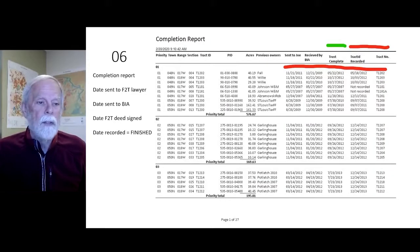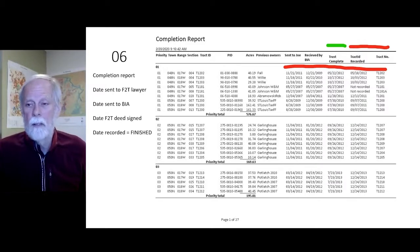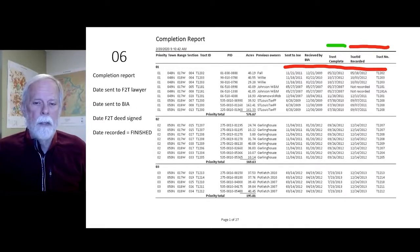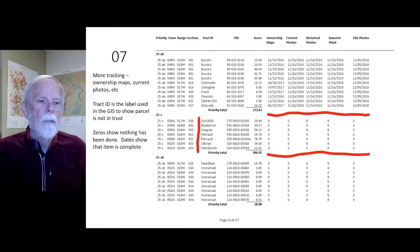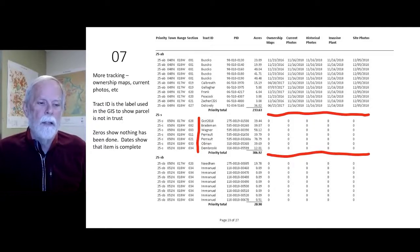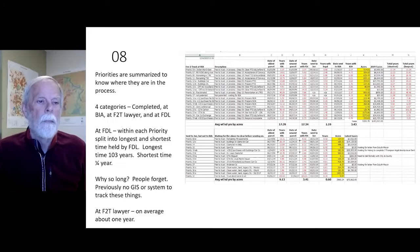We have a completion report tracking date sent to lawyer, date sent to BIA, date fee-to-trust, deed signed, and date recorded. That's when it's finished — it's not finished until the tract is recorded and mapped in my system. Additional tracking is done via ownership maps, current photos, etc. The tract ID is the label used in GIS to show that a parcel is not yet in trust. GIS shows nothing has been done; dates show that it isn't complete.